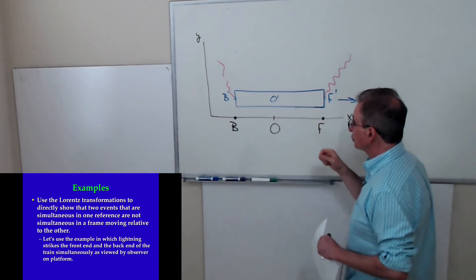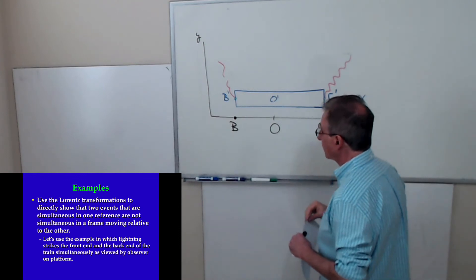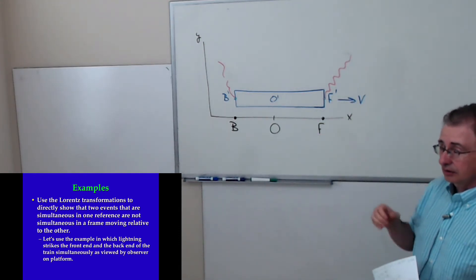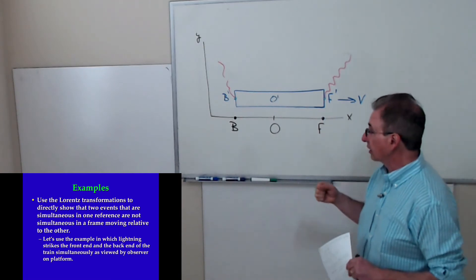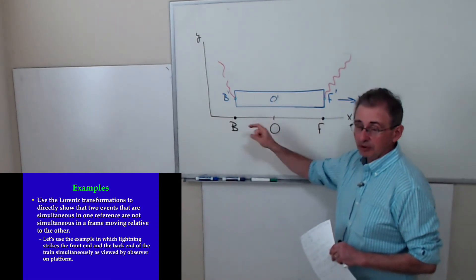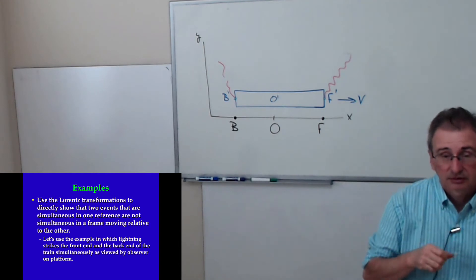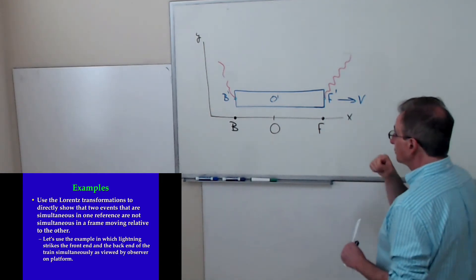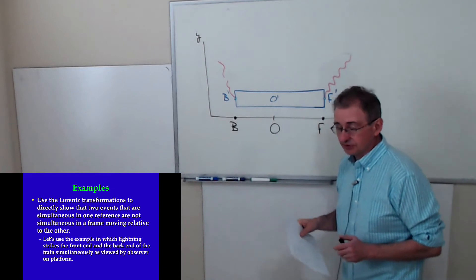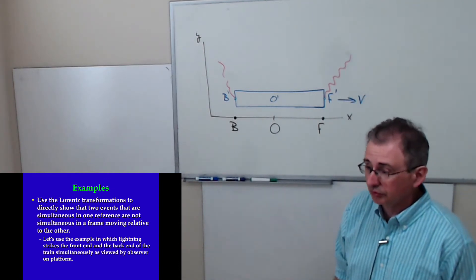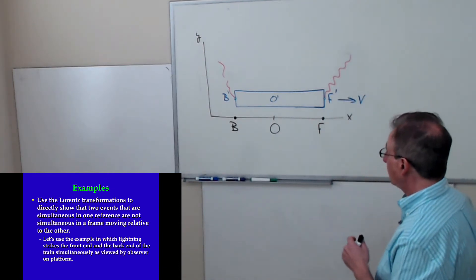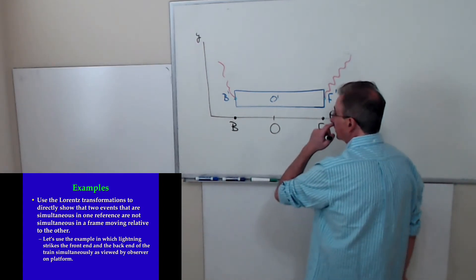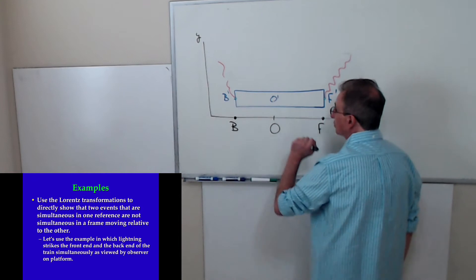We're going to assume that when lightning strikes the front and the back end of the train, the lightning leaves a mark not only on the train but also on the platform. I want to use the Lorentz transformations to calculate the time difference in arrival between the two signals.